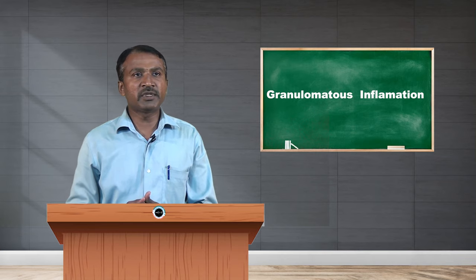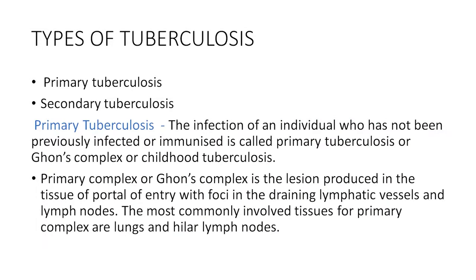There are two types of tuberculosis: primary tuberculosis and secondary tuberculosis. Primary tuberculosis is the infection of an individual who has not been previously infected or immunized, also called Ghon complex or childhood tuberculosis. The Ghon complex is the lesion produced in the tissue at the portal of entry, with spread to the draining lymphatic vessels and lymph nodes. The most commonly involved tissues are the lungs and hilar lymph nodes.